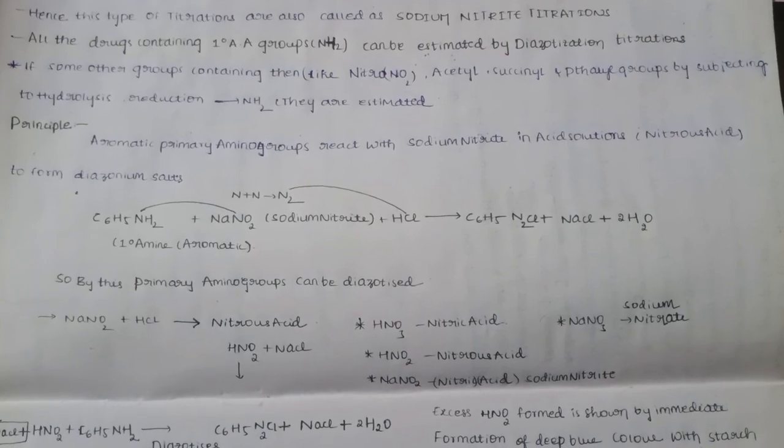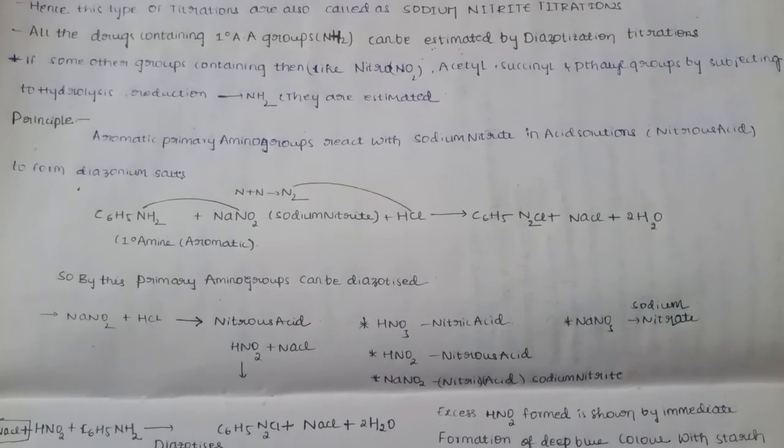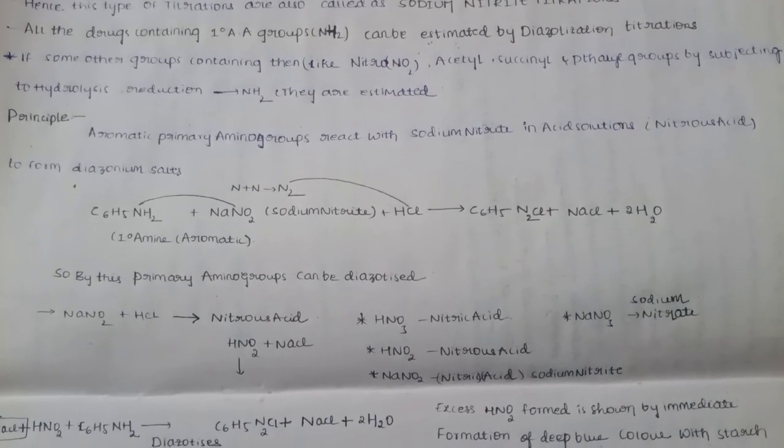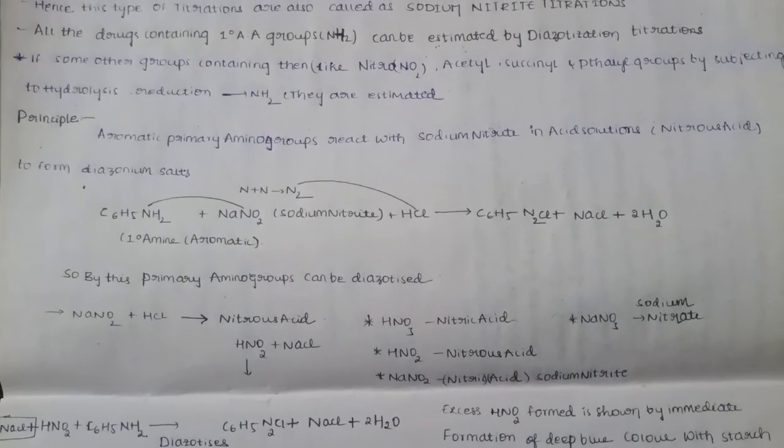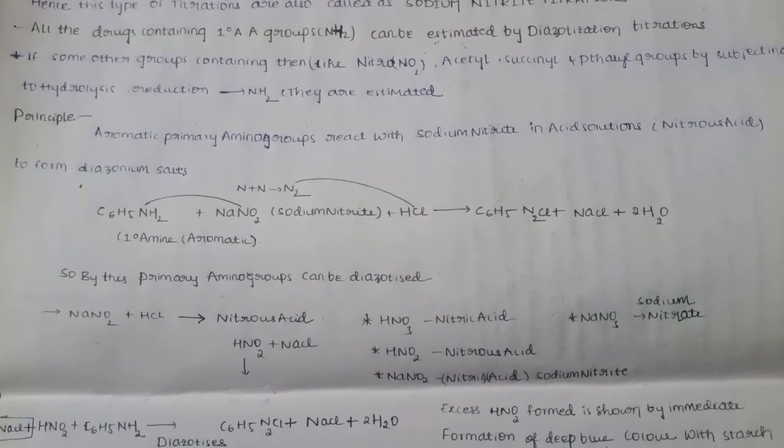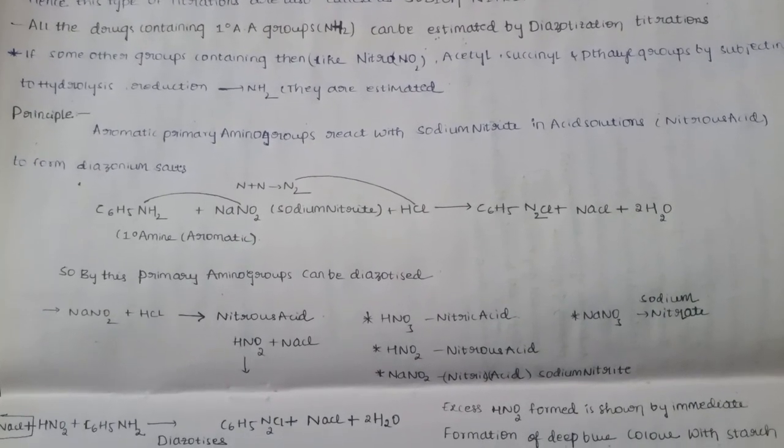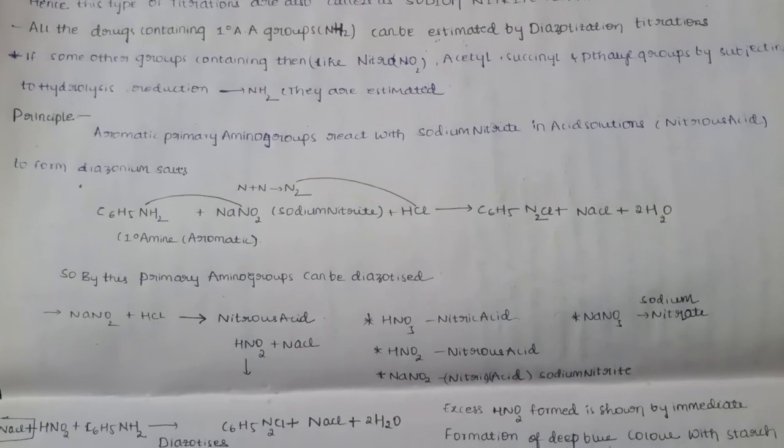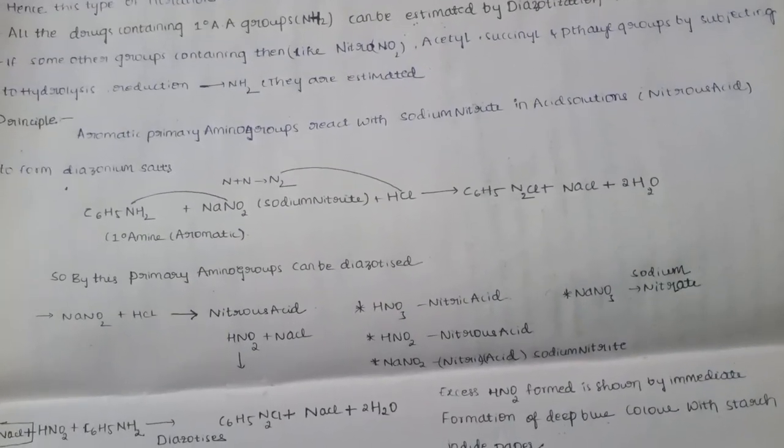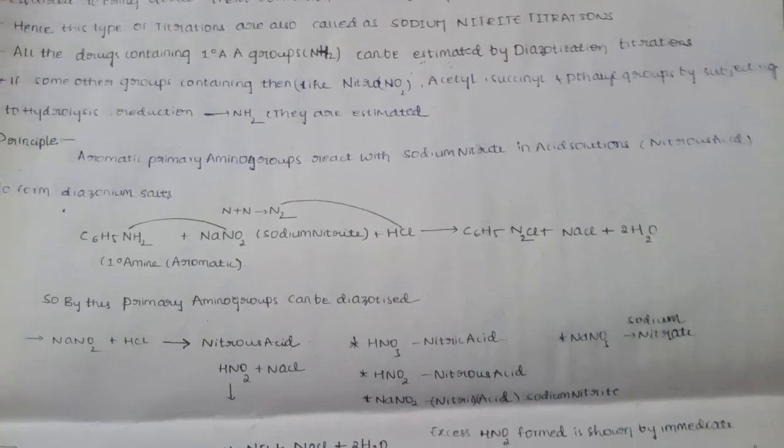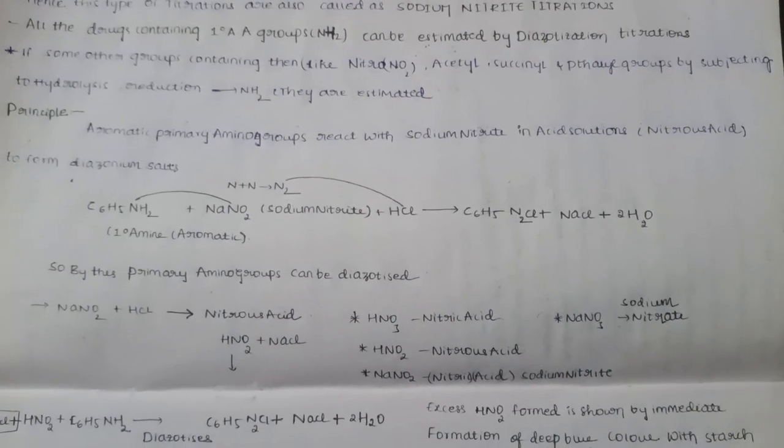By subjecting to hydrolysis or reduction, we can get the amine group. The aromatic ring is completely closed and unsaturated, that means benzene. We need to add the NH2 group to get the aromatic amine group.